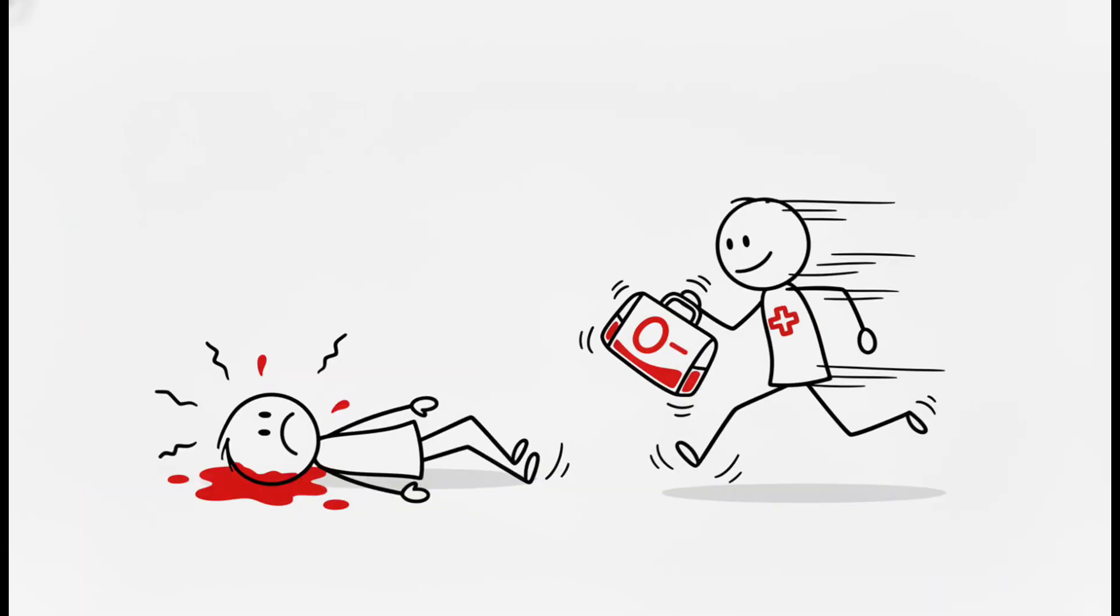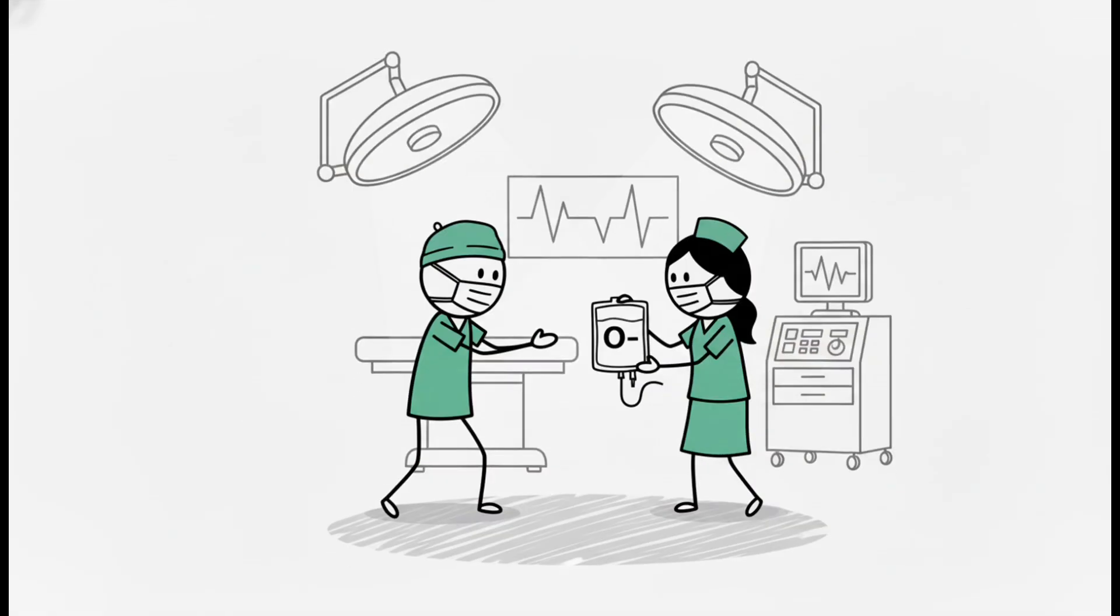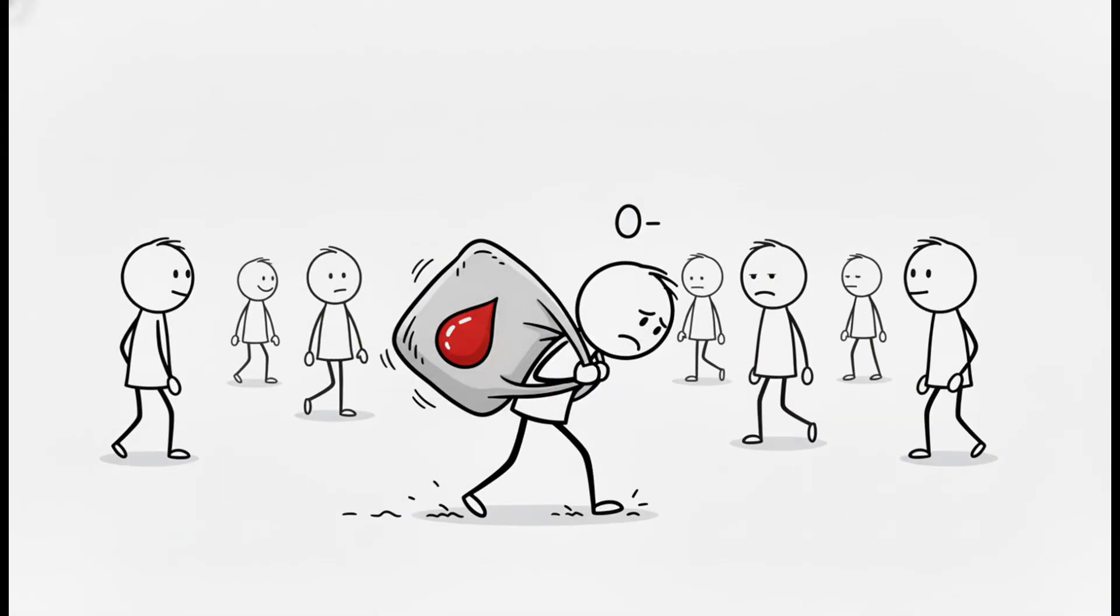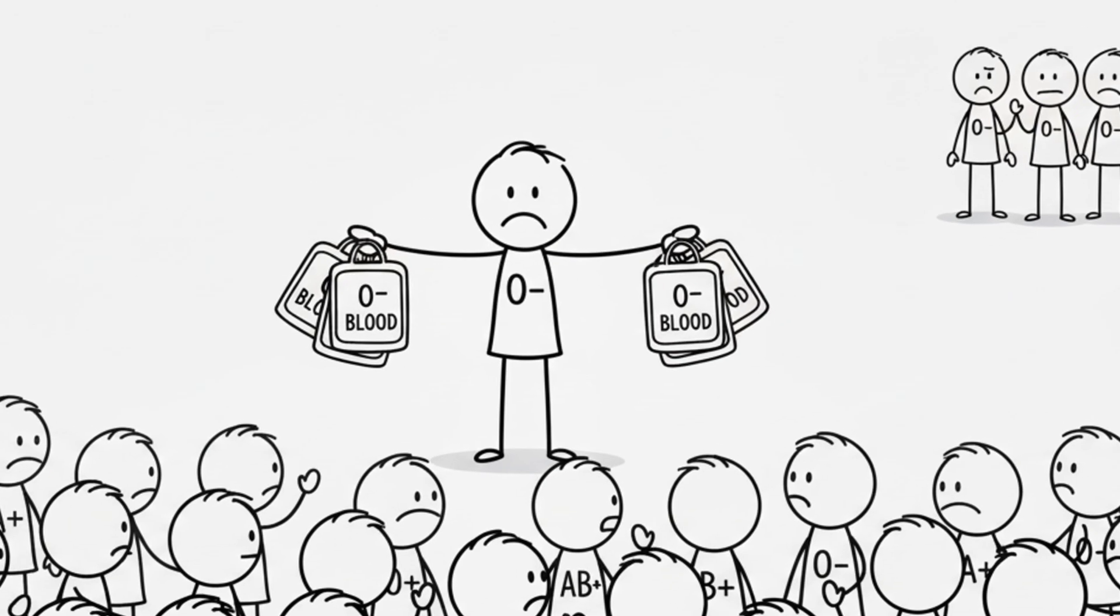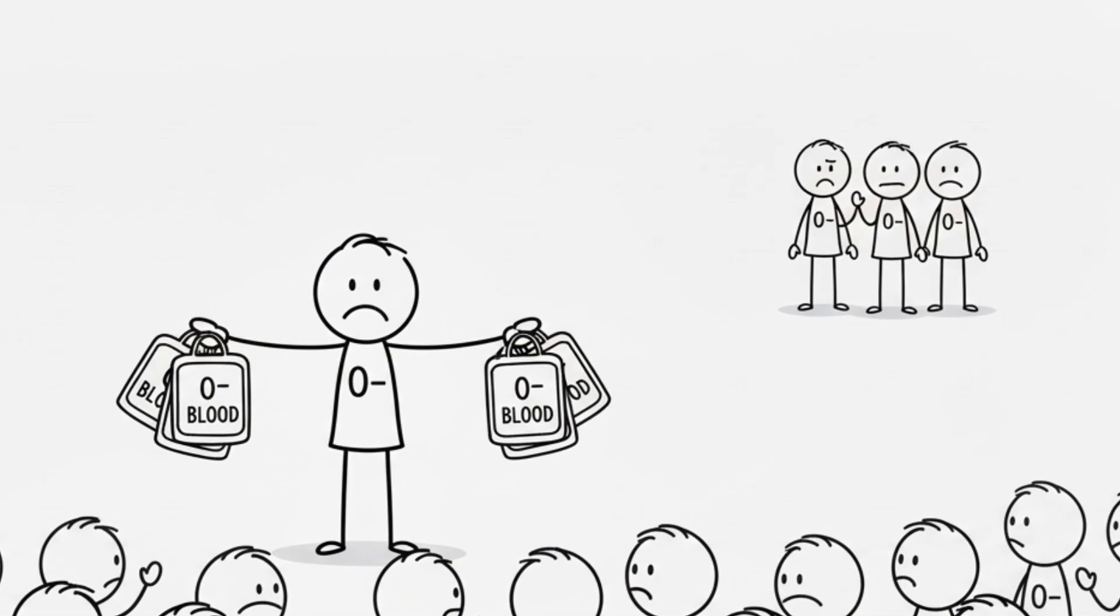When someone's bleeding out and there's no time to test their blood type, O negative is the only option. Paramedics grab it first. Surgeons demand it. It saves lives every single day. But if you have O negative, you live with a hidden burden. You can give to everyone, but you can only receive from other O-negatives, a tiny group.